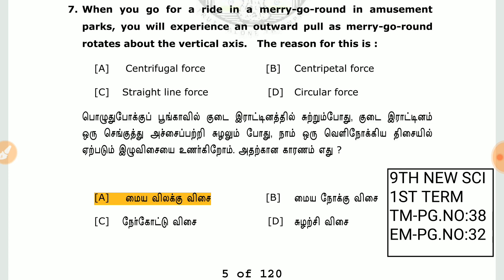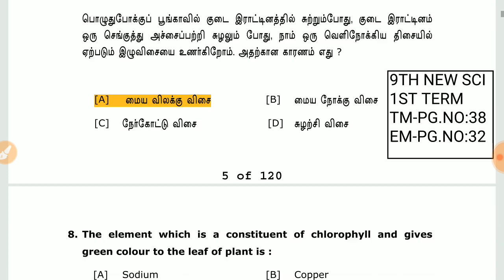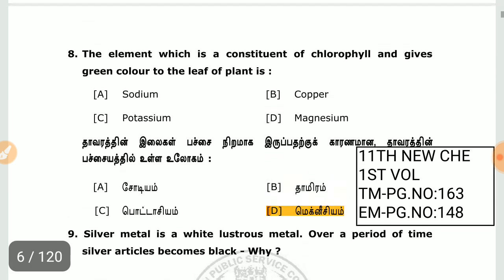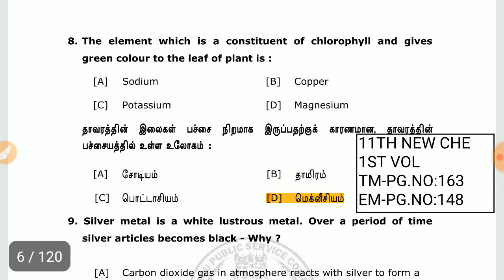So you can use the same for your own language. Let's start with the same question. This is the 9th new book of science. Tamil medium is page number 28. English medium is page number 42. This is the next question. Page number 1 is 10, because the answer is magnesium. So the level 2 new book is page number 18. English medium is page number 148.